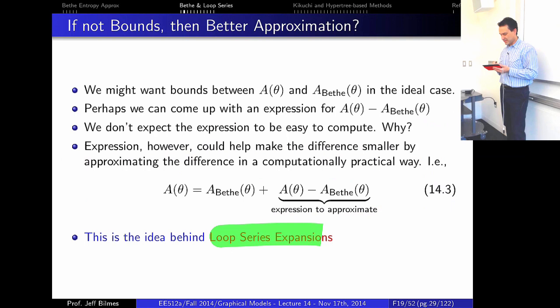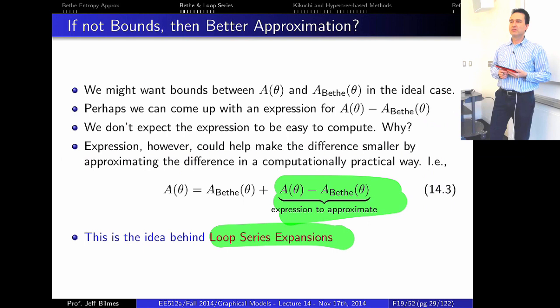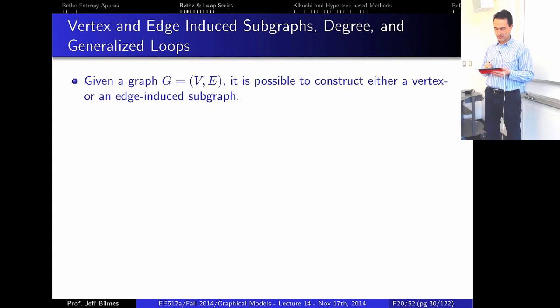This is exactly the idea of loop series expansion: we can approximate the difference between the true log partition function and the beta approximation via a series indexed by graphs corresponding to generalized loops. Depending on how many such graphs we include determines the approximation error.